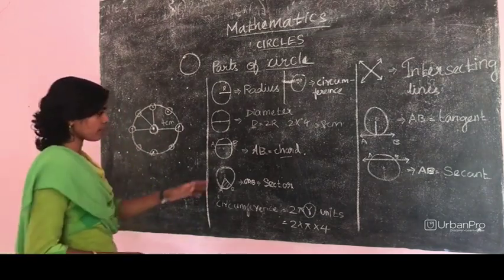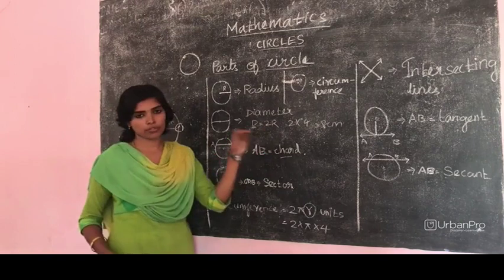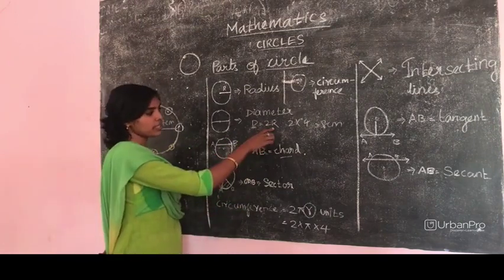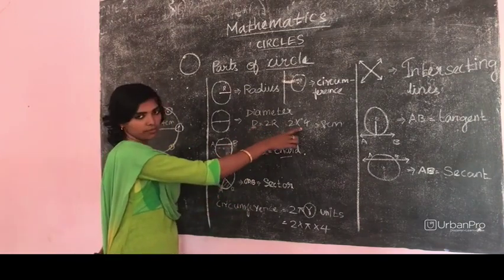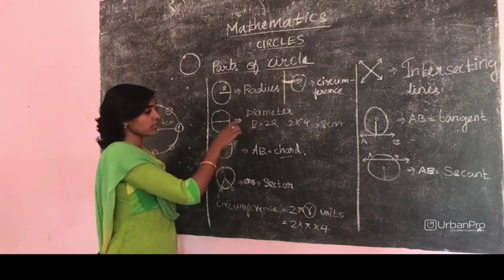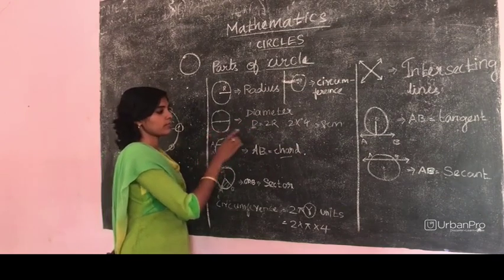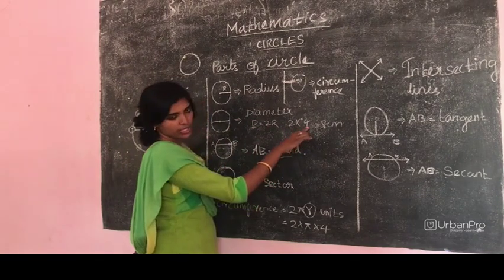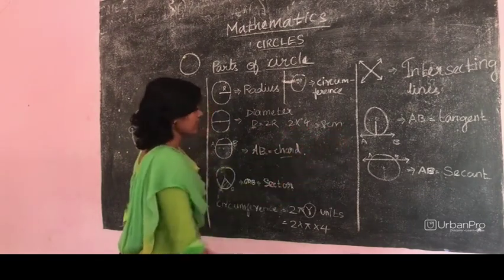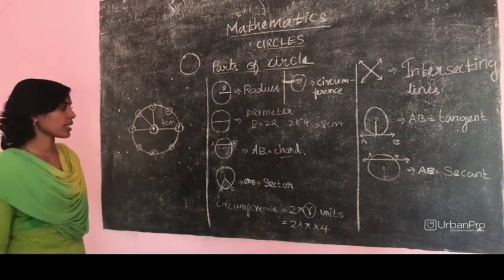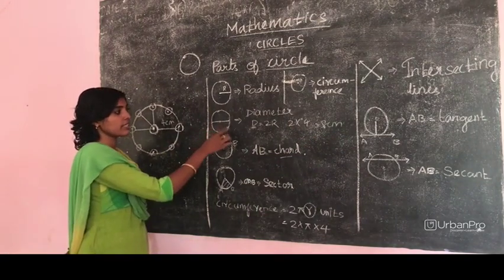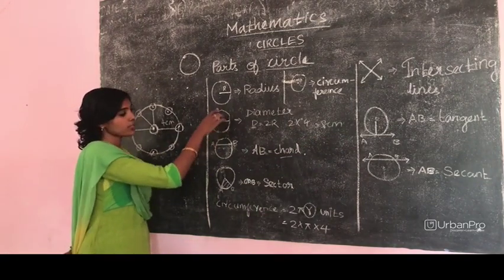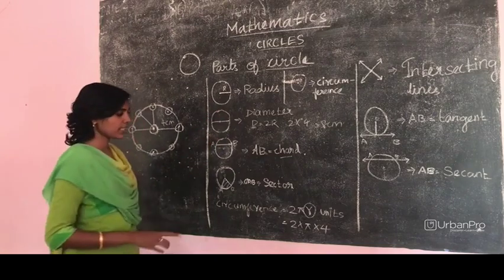Next one: diameter. Diameter is 2 times the radius. See, I am having a radius of 4 cm. So I want to find out the diameter of that particular circle. 2 into that radius—2 into the radius of 4 cm. So the diameter is 8 cm. In other words, we can say the diameter is the line passing through the center of the circle.